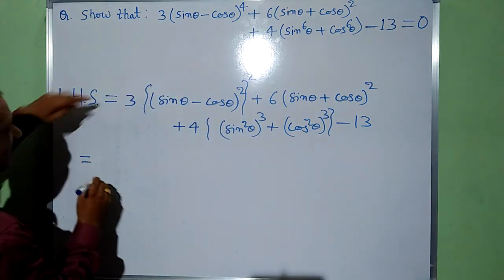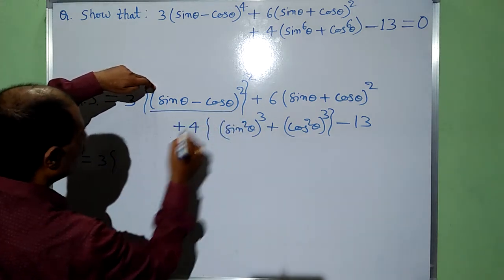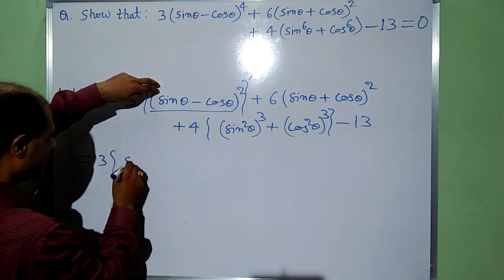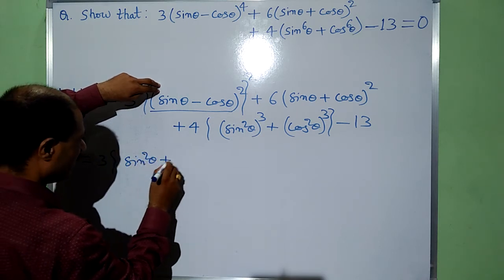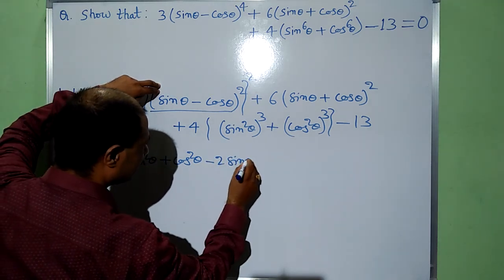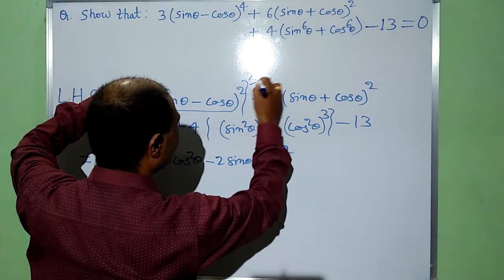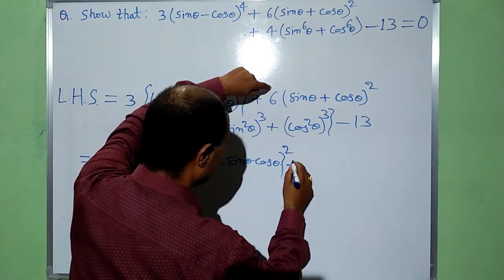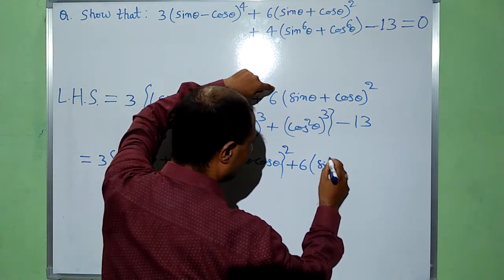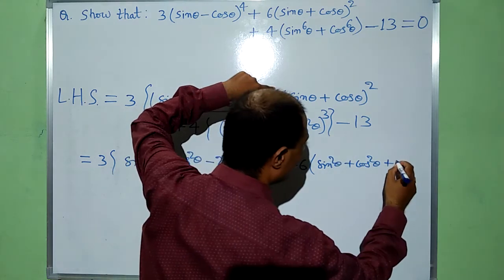This will give us 3 times the whole square. First of all we have to solve this. The (a − b)² whole square gives us a² + b² − 2ab. Now we have to simplify, and plus 6 into (a + b) whole square, that is a² + b² + 2ab.